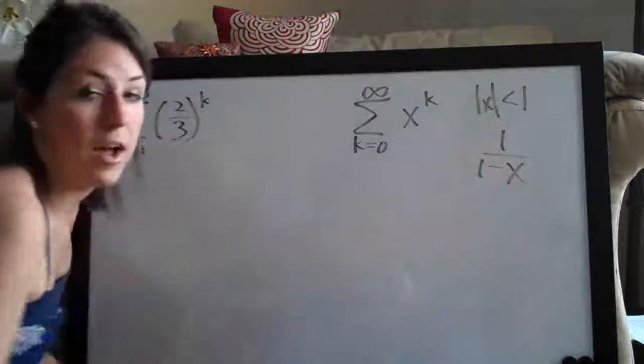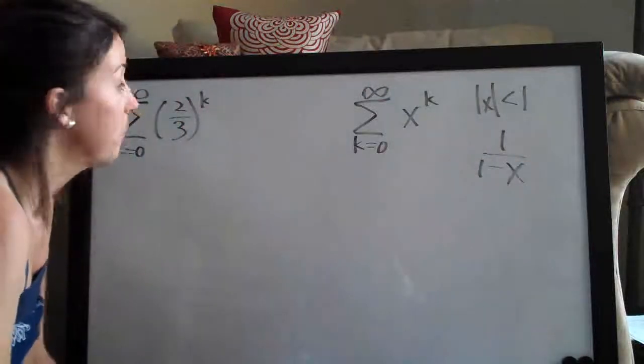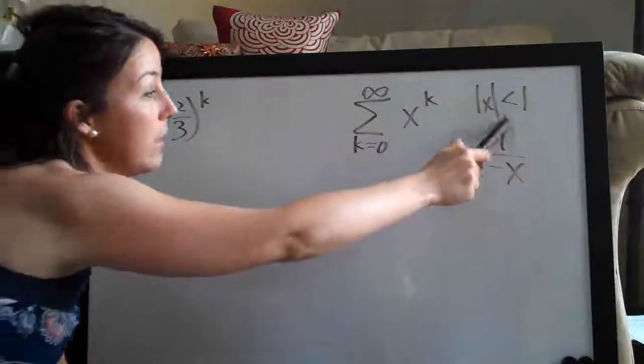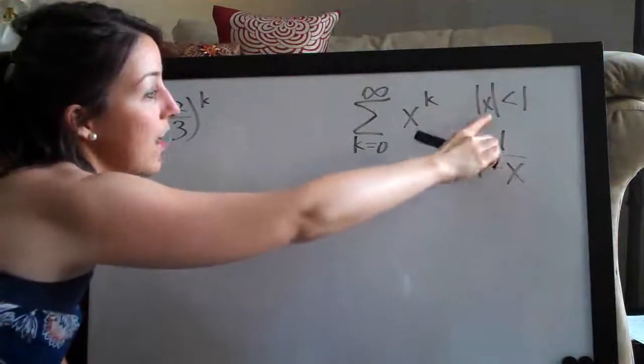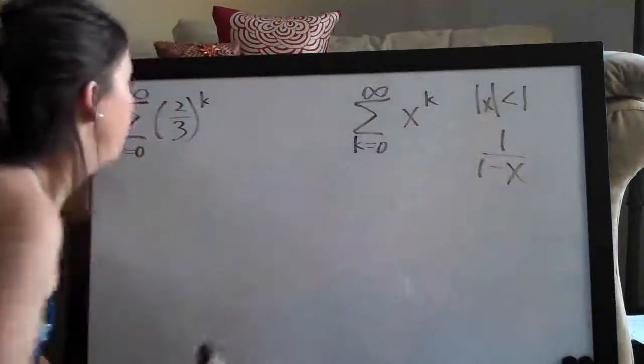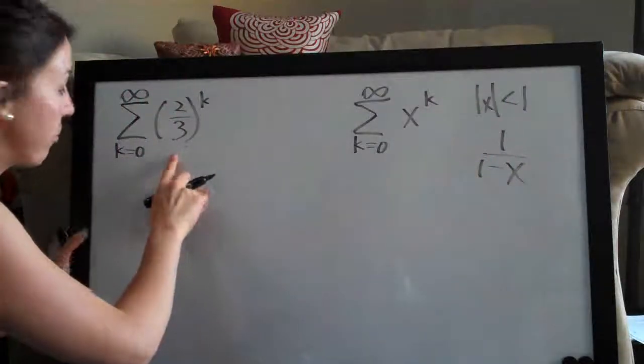Now we have to check and see whether or not it converges or diverges. The way that we do that is with this, which is our convergence test. So the absolute value of x less than one. So that would be, our x is two-thirds...